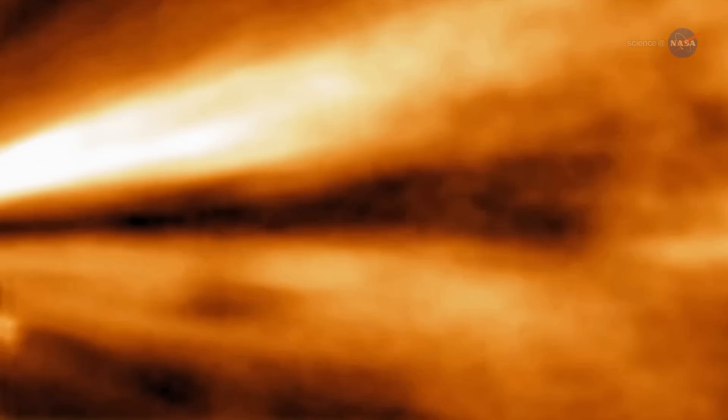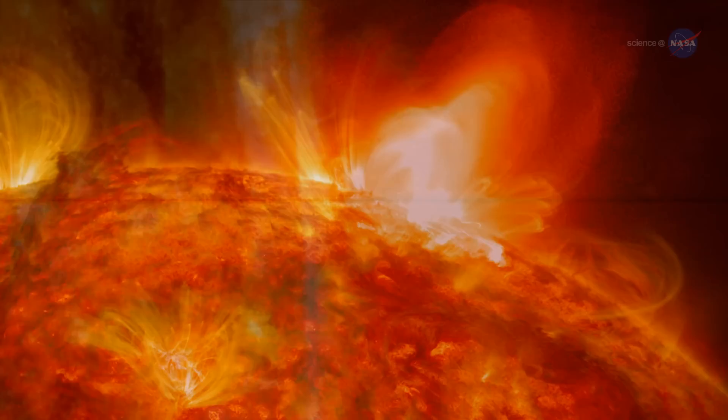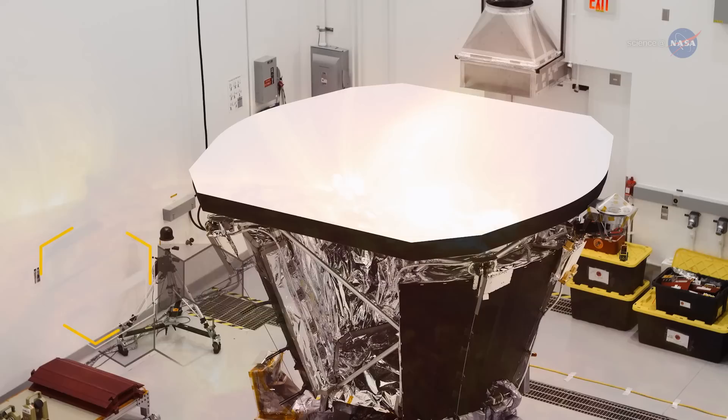The solar wind also travels at immense speeds, and scientists want to learn why. It leaves the sun at a speed of up to 500 miles or 800 kilometers per second and engulfs all major planets in the solar system. What is the source of the wind?